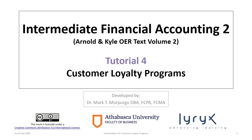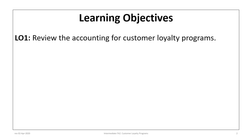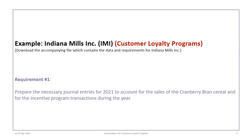Hello and welcome to Intermediate Financial Accounting 2 tutorial 4. This tutorial will review accounting for customer loyalty programs. There is basically one learning objective: to review how to account for customer loyalty programs. This tutorial is based on the Indiana Mills (IMI) example, so please make sure that you download the correct file that contains the data and requirements for this problem and review it thoroughly before proceeding.